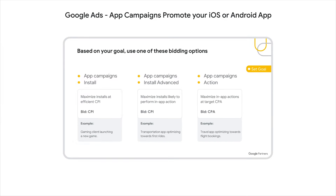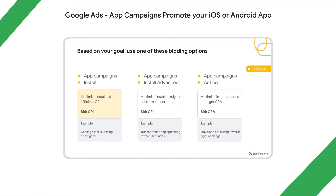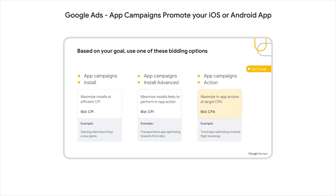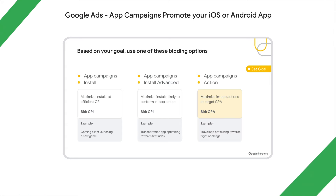If your goal is simply app installs, you'll get installs at an efficient cost per install — best for distribution and reach, for example if you're a gaming app launching a new game. If you want users to take a near-term action after downloading, choose App Campaigns with Install Advanced. You'll still use cost-per-install bidding, but the system will generate downloads from users more likely to take an in-app action, like booking a first ride on a ride-hailing app. For these two campaign types, your daily budget should be 50 times the target cost per install. If you want to maximize in-app actions at a target CPA, the third option is right — for example, a travel app wanting to generate flight or hotel bookings. Action campaigns should have a daily budget of 10 times the target CPA.